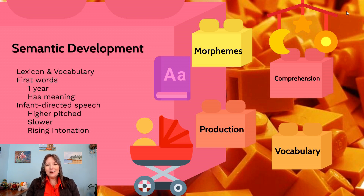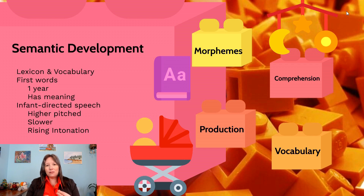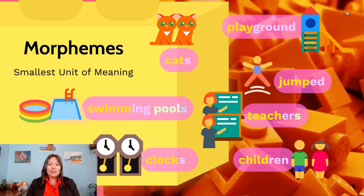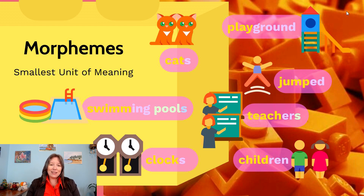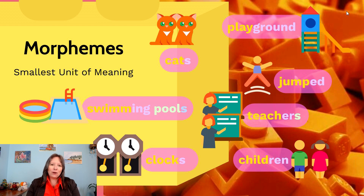When talking about semantic development, we also have to discuss morphemes. Rather than phonemes, which are the smallest unit of sound, morphemes are the smallest unit of meaning. It's important to understand we're still talking about spoken language, not written language, so these can be harder to navigate if you think about them in written form. It's more helpful to think about how we hear words.